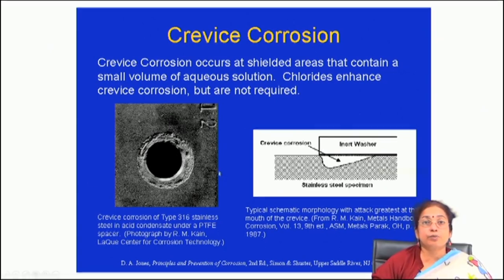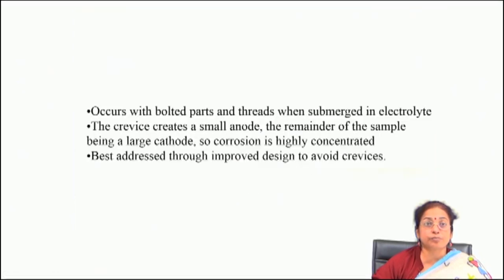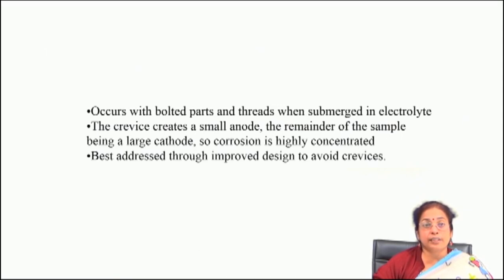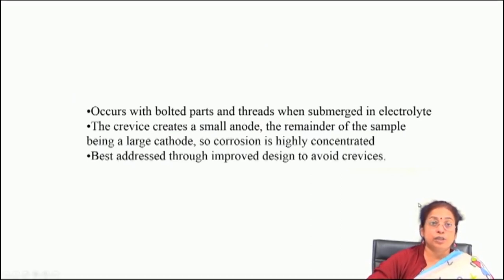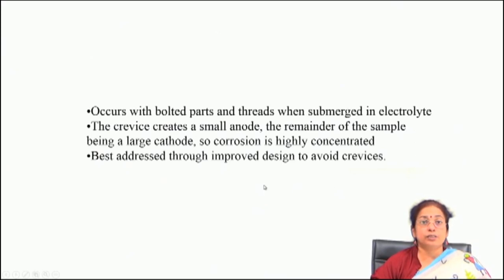Crevice corrosion is observed not only in sealed areas but also anywhere there is a loosely sealed surface — for example, where you have a washer that is loosely sealed. It occurs with bolted parts and threads when submerged in electrolyte. The crevice creates a small anode and the remainder of the sample is a large cathode. Not only is there differential aeration cell formation, but also an unfavorable area ratio, because the crevice area is much smaller than the outside region. Due to this very small anode-to-cathode ratio, the corrosion rate inside the crevice is much higher than outside.